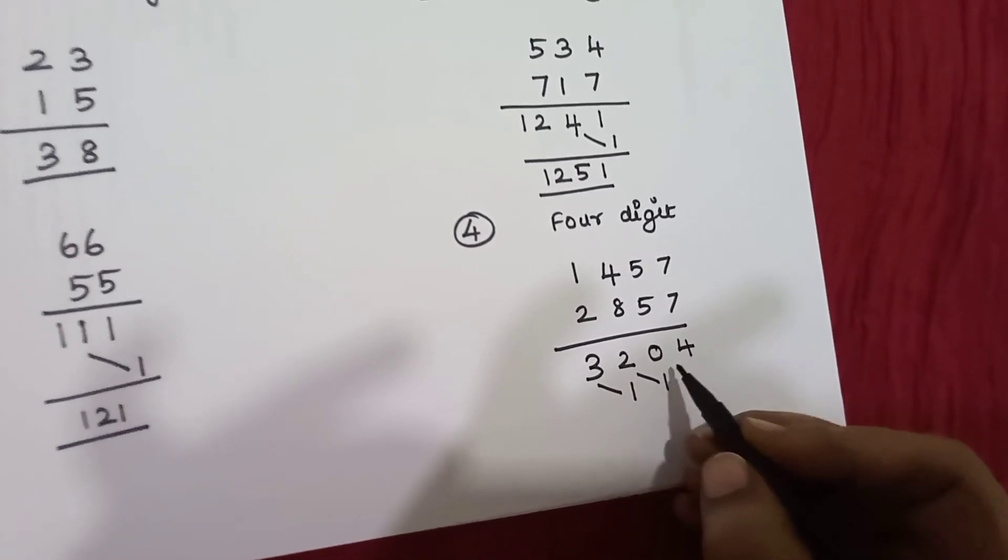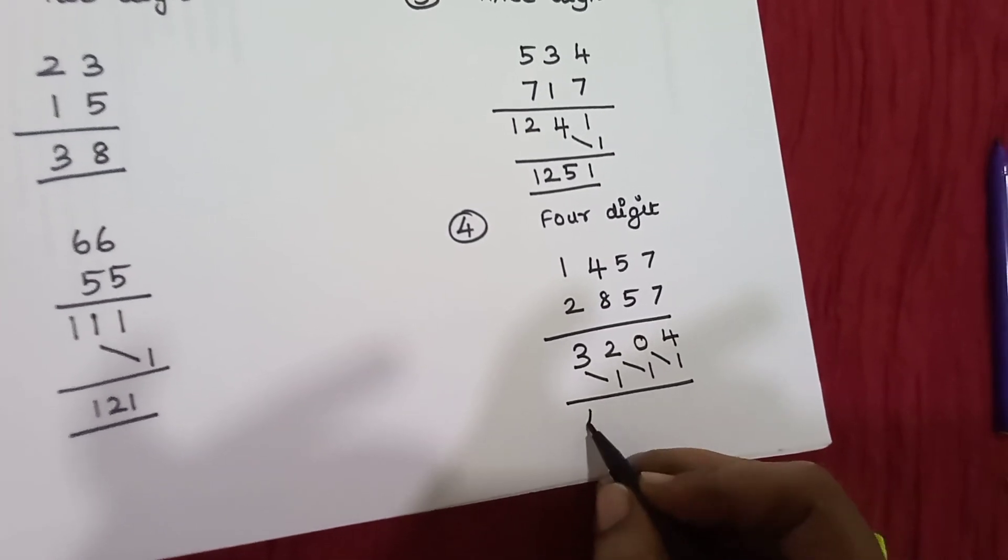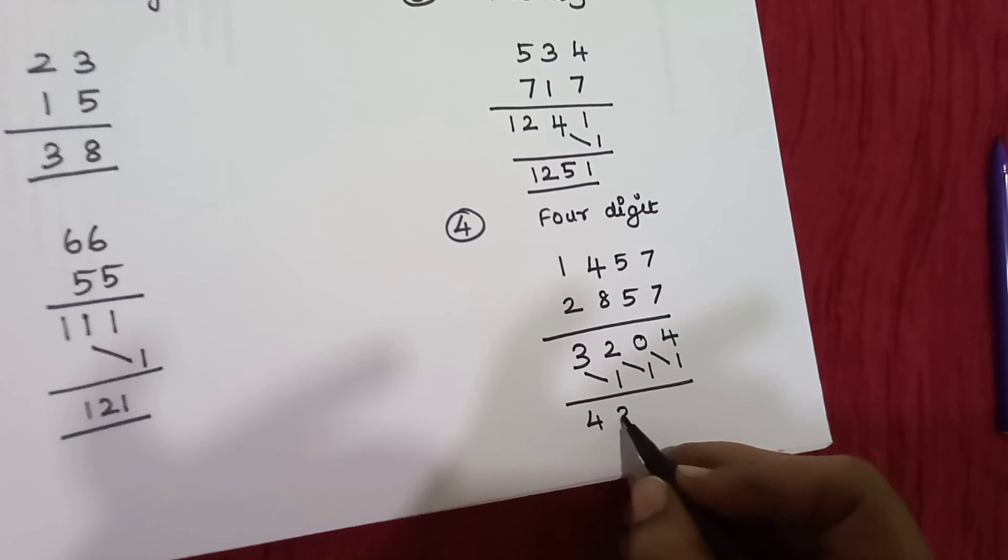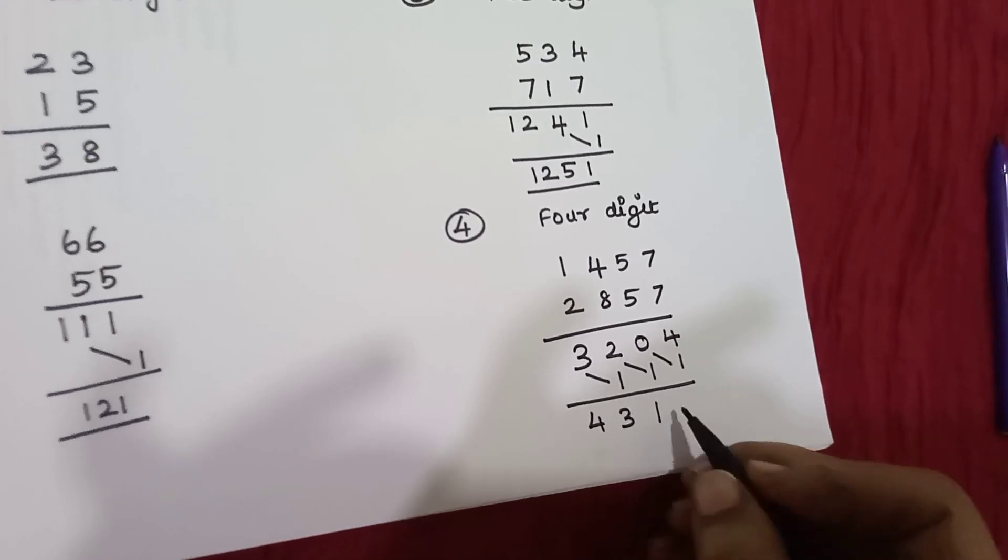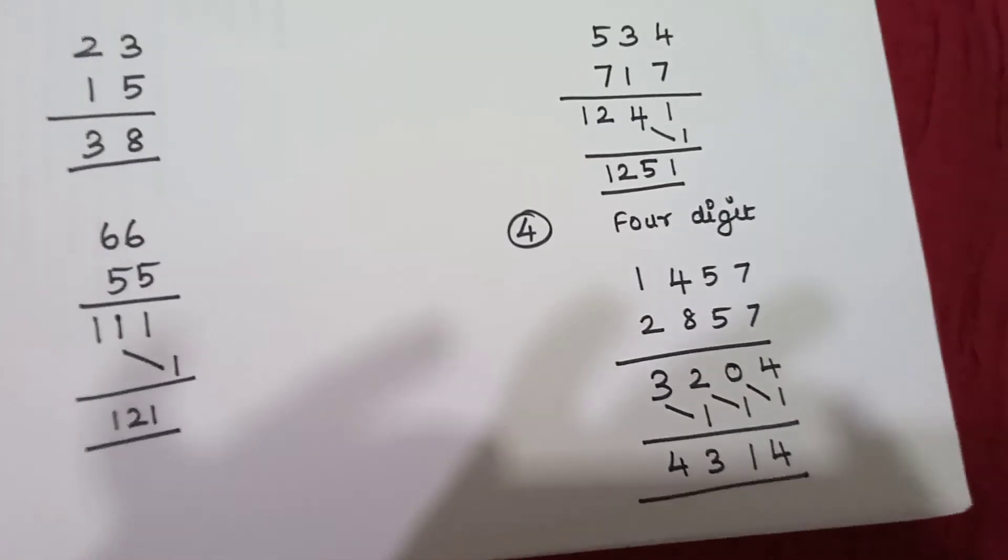4 add 1. 7 plus 7, 14, 4 add 1. So 3 plus 1, 4. 2 plus 1, 4. 2 plus 1, 3, 14.